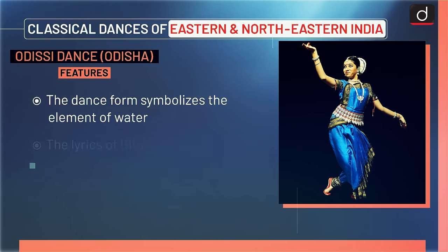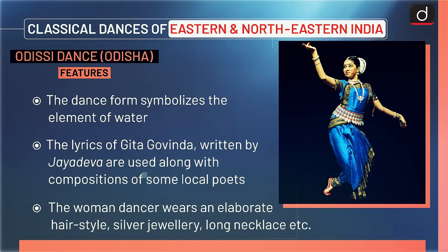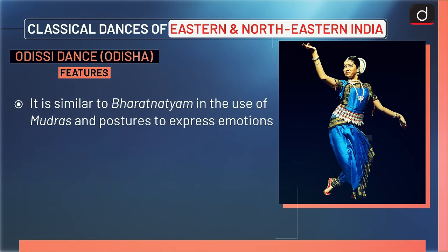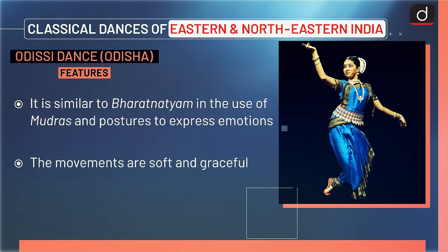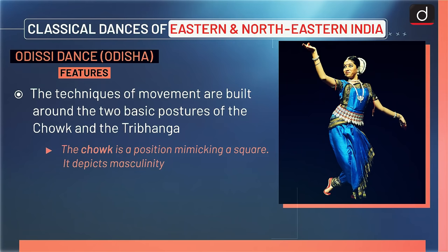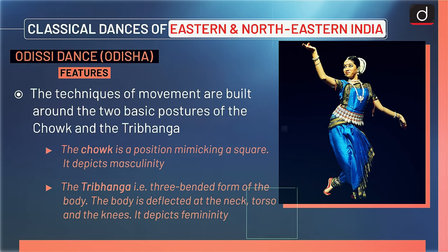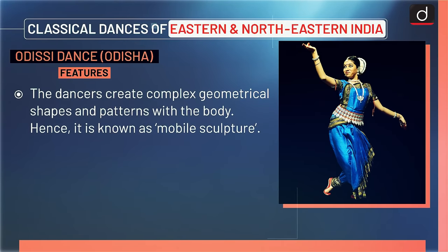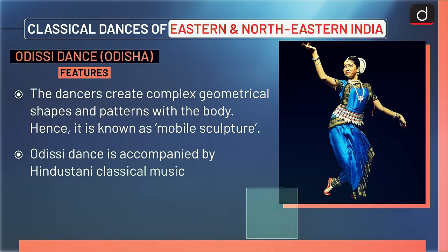The dance form symbolizes the element of water. The lyrics of Gita Govind, written by Jayadeva, are used along with compositions of some local poets. The woman dancer wears an elaborate hairstyle, silver jewelry, long necklace, etc. It is similar to Bharatanatyam in the use of mudras and postures to express emotions, and the movements are soft and graceful. The techniques of movement are built around two basic postures: Chowk and Tribhanga. The Chowk is a position mimicking a square and depicts masculinity. Tribhanga — the three-bent form of the body — deflects at the neck, torso and knees, depicting femininity. The dancers create complex geometrical shapes and patterns with the body, hence it is known as mobile sculpture.